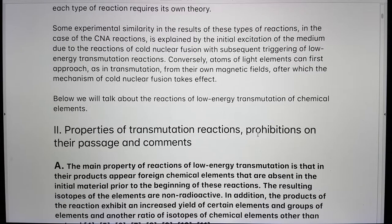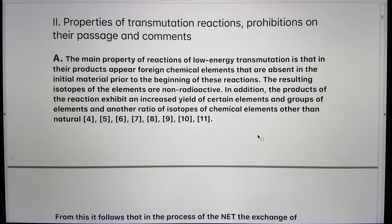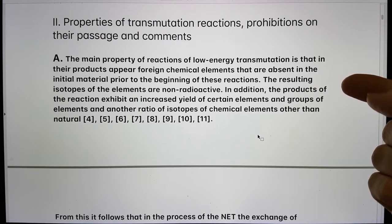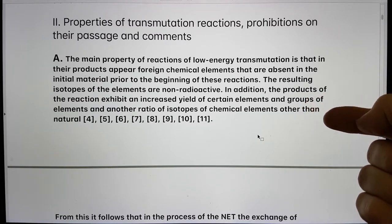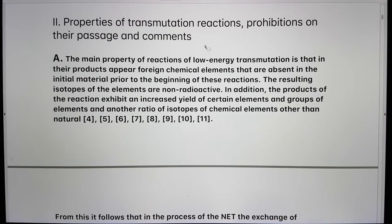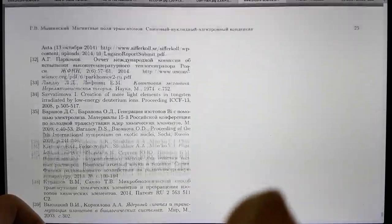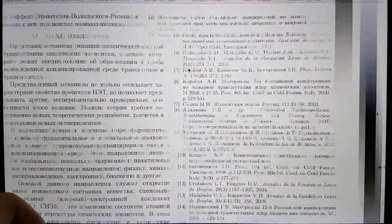The main property of reactions of low-energy transmutation is that in their products appear foreign chemical elements that are absent in the initial material prior to the beginning of these reactions. The resulting isotopes of the elements are non-radioactive. In addition, the products of the reaction exhibit an increased yield of certain elements of groups of elements and another ratio of isotopes of chemical elements other than natural. Now, the references I haven't included in this translation that I've done, but again, you can go to the original paper which is online and the references are all given there.